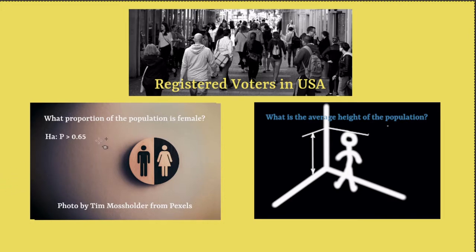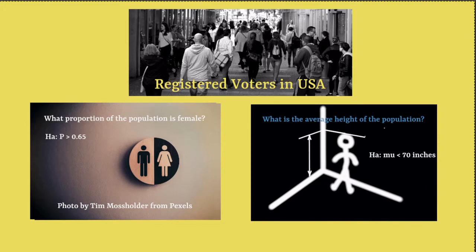A hypothesis test comes into play when somebody makes a claim about a population parameter. For example, someone might claim that the proportion of females in the population is more than 65% — that's called the alternative hypothesis, or the research hypothesis. In the case of the average height parameter, somebody might claim that the average height is less than 5 feet 10 inches. The challenge in this module is determining which kind of problem you have and how to carry out the hypothesis test.